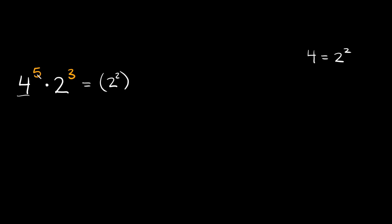And then we're still multiplying by two to the third power. But if you notice something now, we have the same base — we have a two here and a two here. So that's exactly what we're looking for, because now we can simplify this.